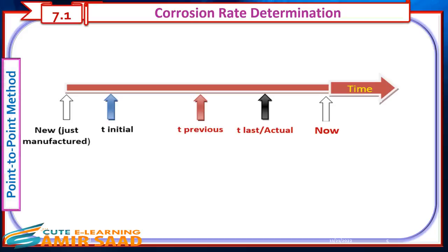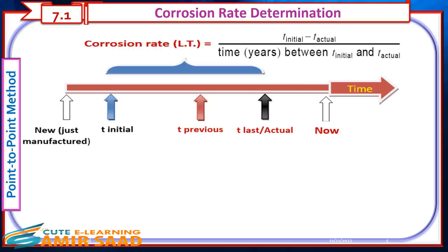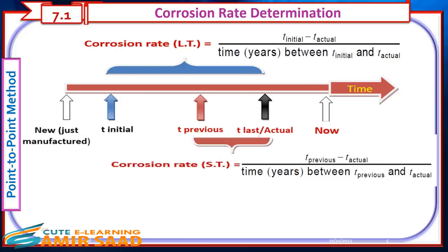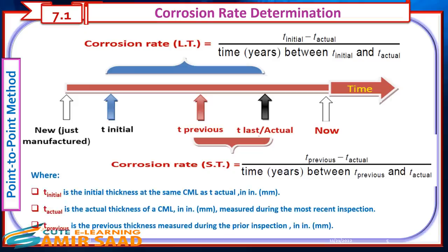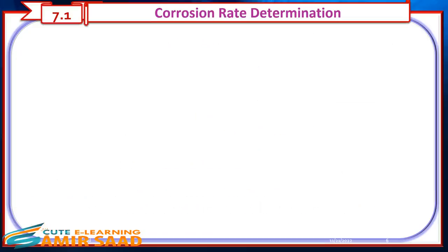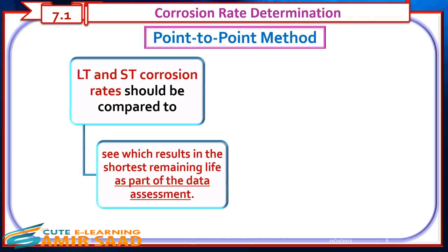Corrosion rate calculations by the point-to-point method are illustrated in the figure. The long-term corrosion rate equals T-initial minus T-actual, divided by the time between T-initial and T-actual. The short-term corrosion rate equals T-previous minus T-actual, divided by the time between T-previous and T-actual. Where T-initial is the initial thickness at the same CML as T-actual, T-actual is the thickness measured during the most recent inspection, and T-previous is the thickness measured during the prior inspection. The long-term and short-term corrosion rates should be compared to determine which results in the shortest remaining life.